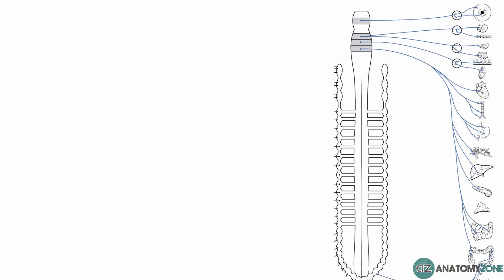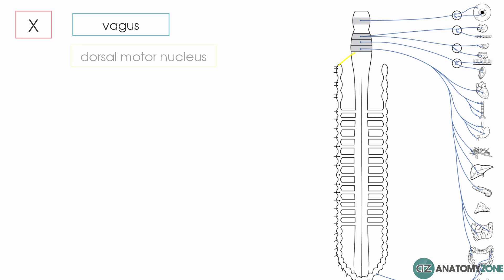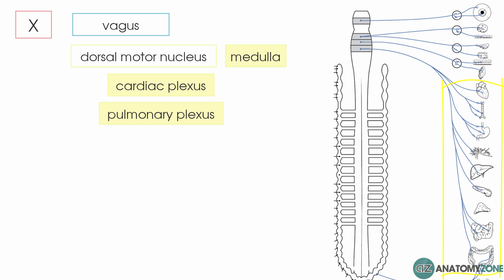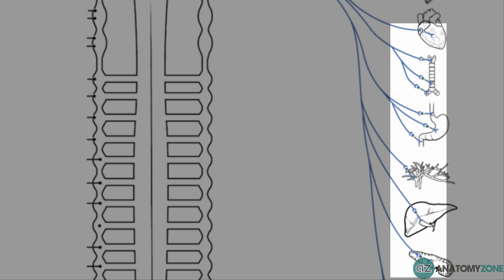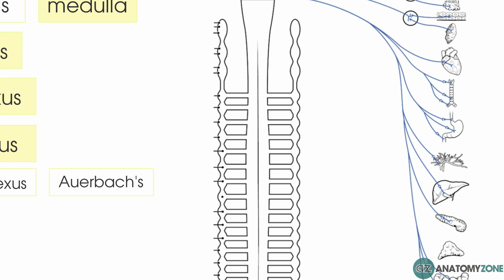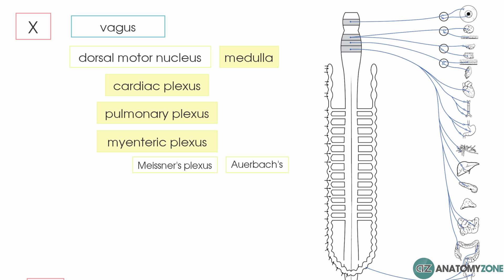Moving on to the vagus nerve, this is different because it doesn't have a peripheral ganglion in the head. It originates in the dorsal motor nucleus of the vagus in the medulla and has a wide distribution to the thoracic and abdominal viscera via various plexuses — cardiac, pulmonary, and the myenteric plexuses in the gut wall, including Meissner's plexus and Auerbach's plexus. As seen in the diagram, the postganglionic fibres of the vagus nerve are very short, synapsing within or very near the target organ.